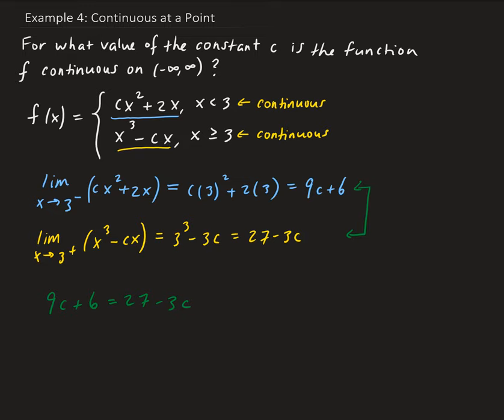This is a simple equation to solve. We get 12C equals 21, therefore C equals 21 over 12. That is our solution - the constant C value that makes this function continuous on the entire real interval.